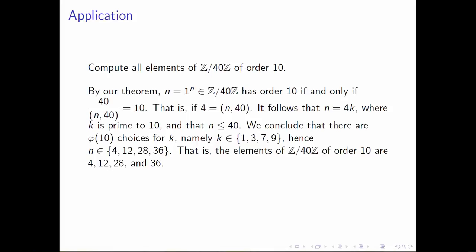Here's the application. Let's say we're interested in computing all elements of Z mod 40 that happen to have order 10. Z mod 40 is a nice, easy group to work with. We can pick out a generator without thinking—we can use 1, a very nice choice. Any number n in Z mod 40 can be thought of as 1 raised to the nth power, meaning 1 added to itself n times.